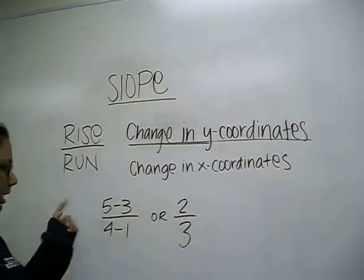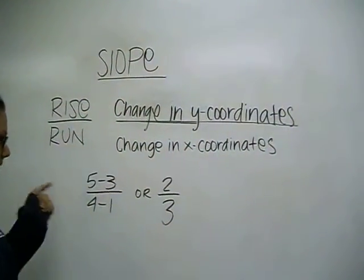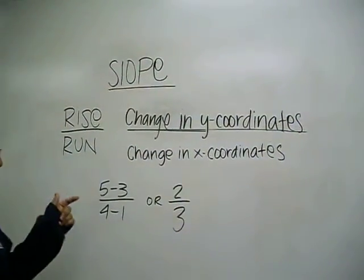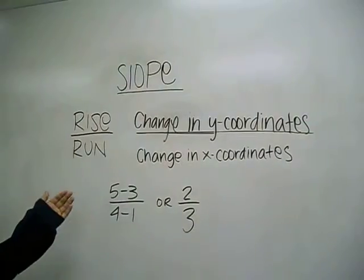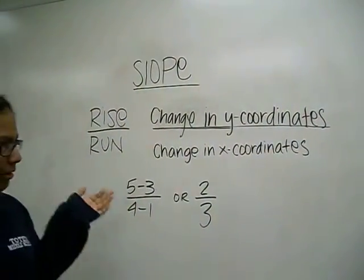5 minus 3 is 2, and 4 minus 1 is 3. So your fraction is 2 thirds.